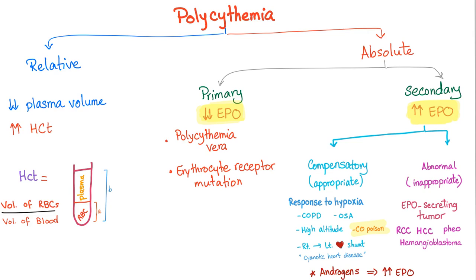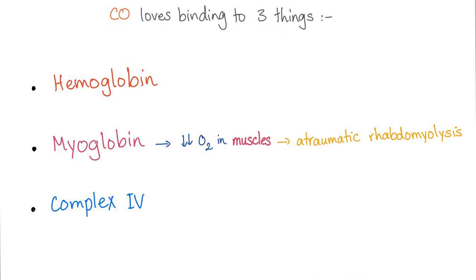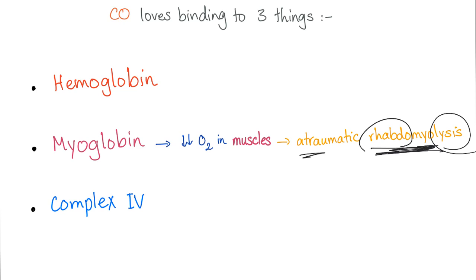Carbon monoxide will bind to one of three things: hemoglobin, myoglobin, and complex 4 in the electron transport chain. When it binds to myoglobin, less oxygen is available for the muscles, leading to destruction of the muscles — rhabdomyolysis. This affects the skeletal muscles. It is atraumatic rhabdomyolysis — interesting, because most rhabdomyolysis is due to injury or accidents, but this is atraumatic.